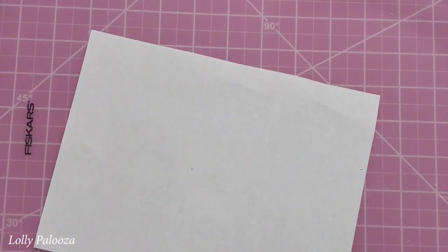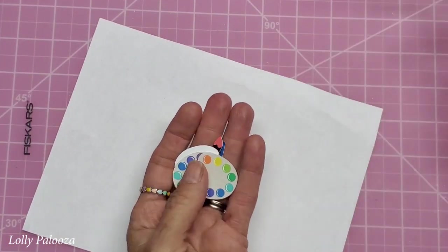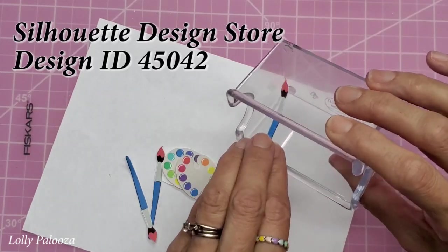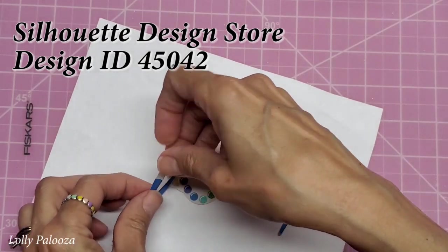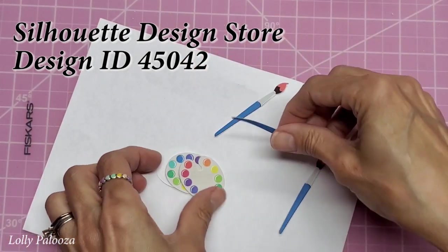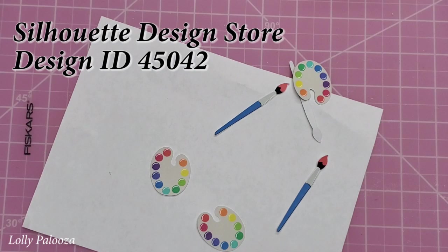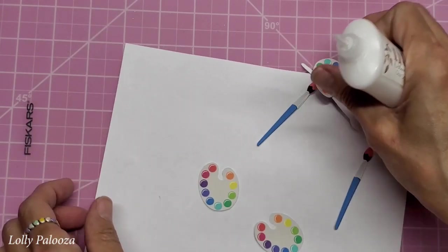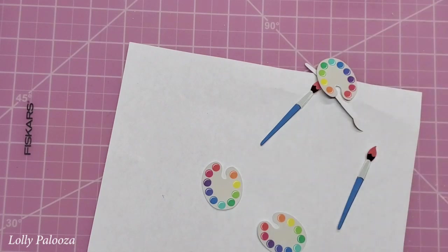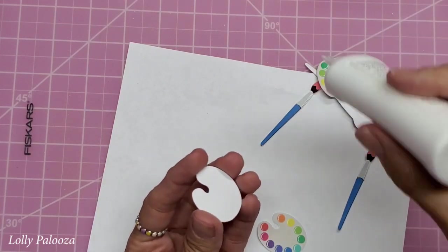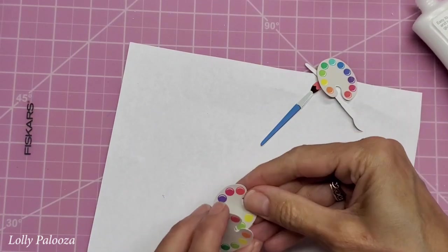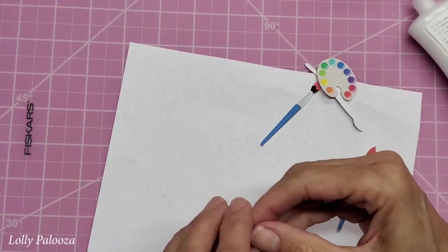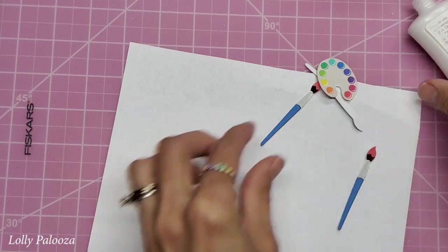In order to make this, I used this cut file in Silhouette Design Studio, and the paintbrush and the paint palette and crayons were all in one cut file. I did three of each because I wasn't sure how thick my paperclip was going to be, how much sturdiness I needed. I think I'm glad I did.